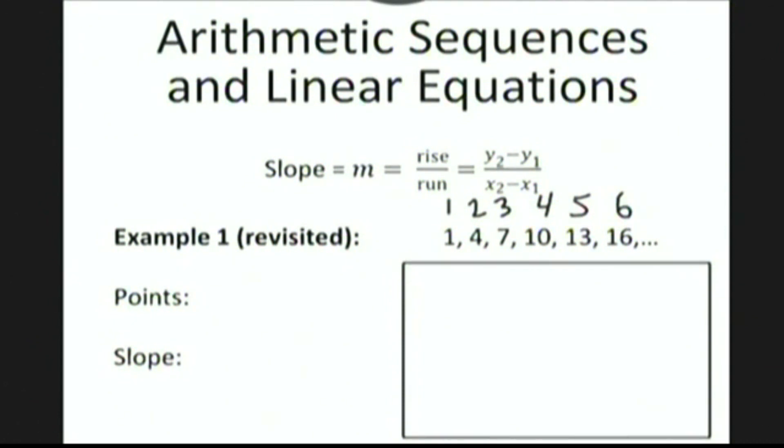So we can identify these terms of the sequence with the points (1,1), (2,4), (3,7), and so on. Let's choose two of these points. Let's say (2,4), and I'll choose the point (6,16).